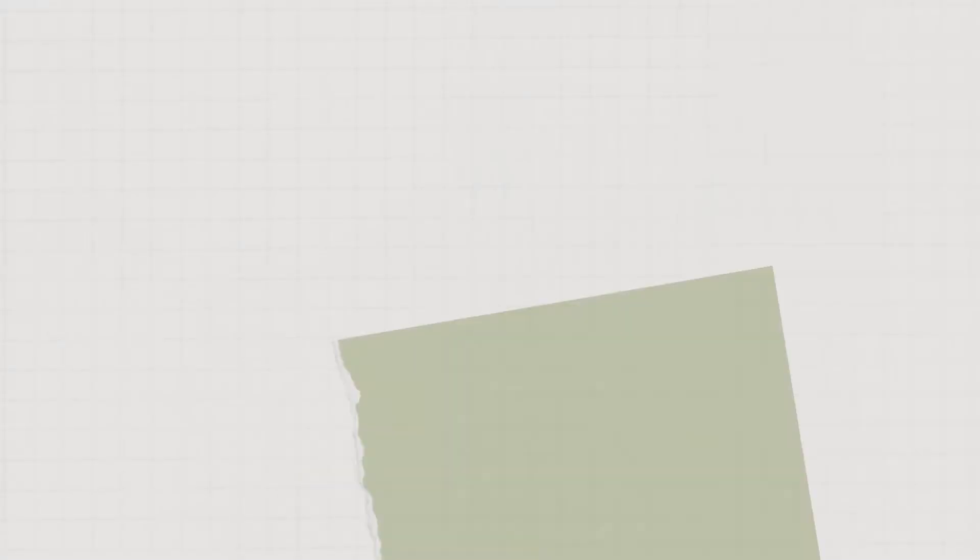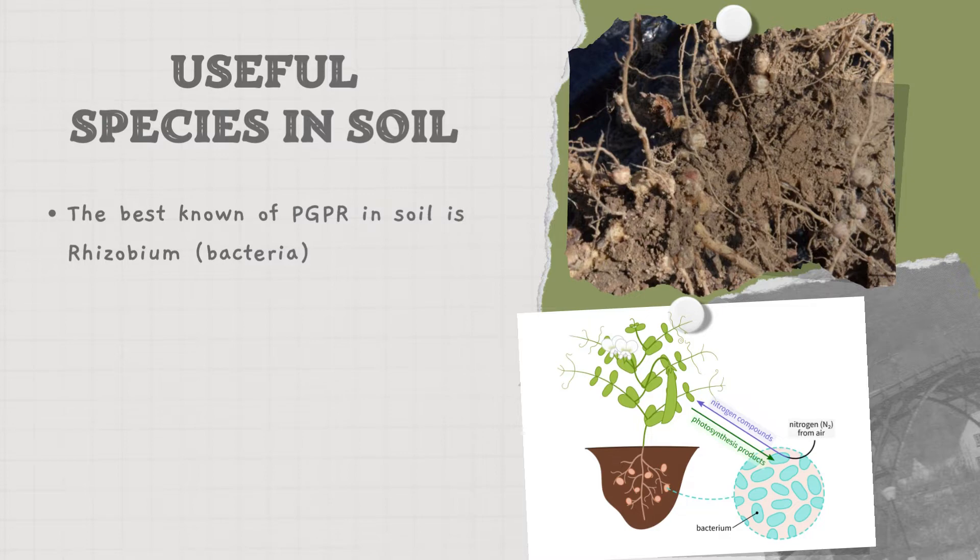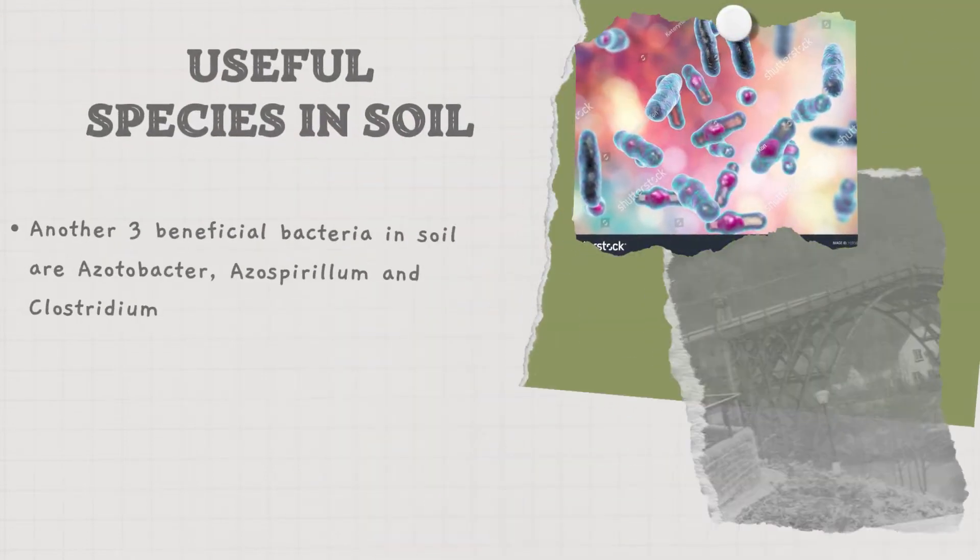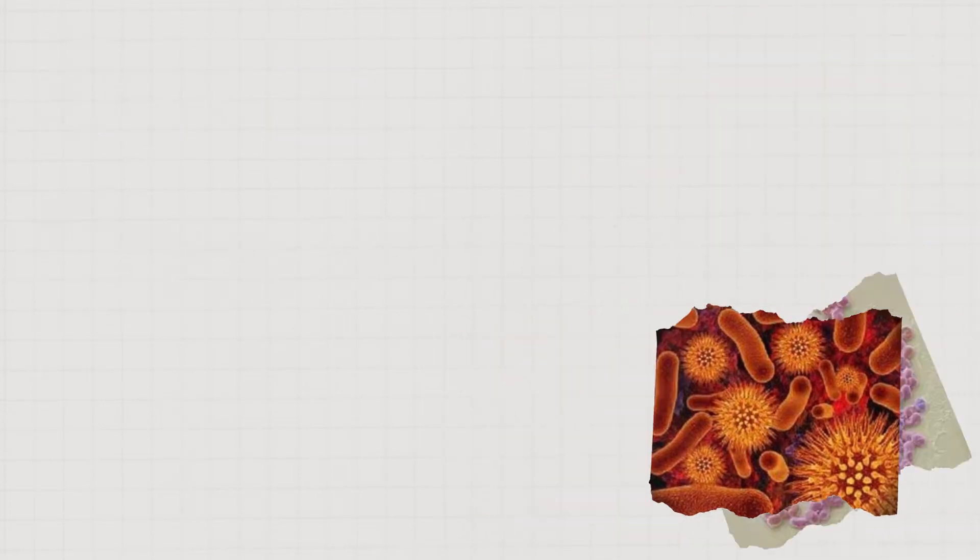The best known plant growth promoting rhizobacteria, also known as PGPR in soil, is Rhizobium. Rhizobium functions by fixing nitrogen and producing nodules in leguminous plants. For your information, there are another three beneficial bacteria in soil that fix nitrogen without a plant host and live freely in soil, such as Azotobacter, Azospirillum, and Clostridium.